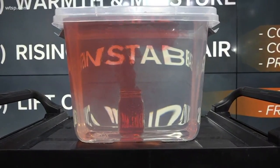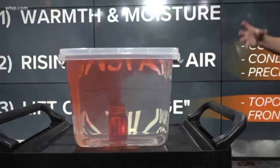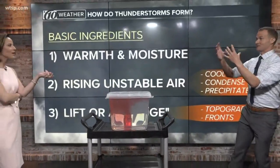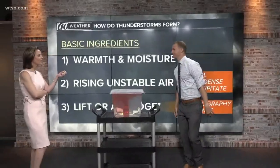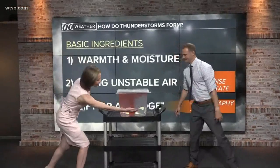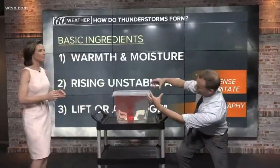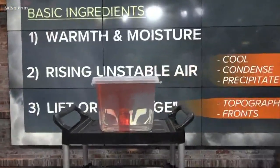It cools, it condenses, it produces the rain. Eventually it starts creating the thunder because of the ice crystals up in the clouds that creates the lightning. I love that — you can see that. It's just like that billowing cumulus cloud at the anvil top. All that right there. Awesome.